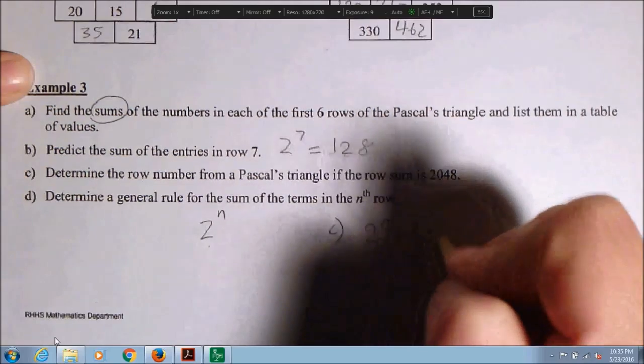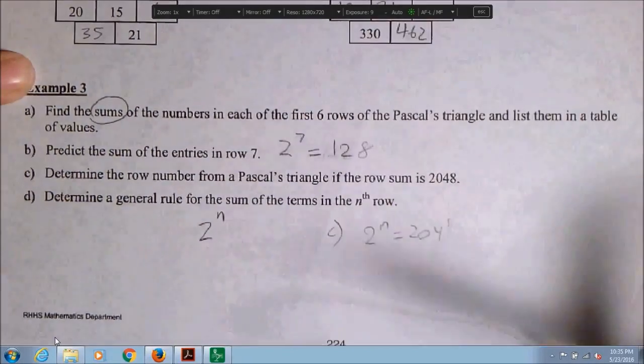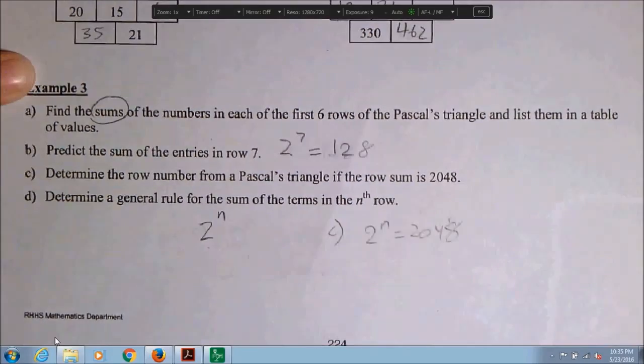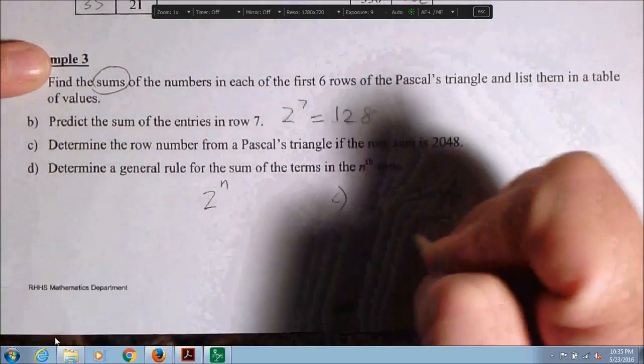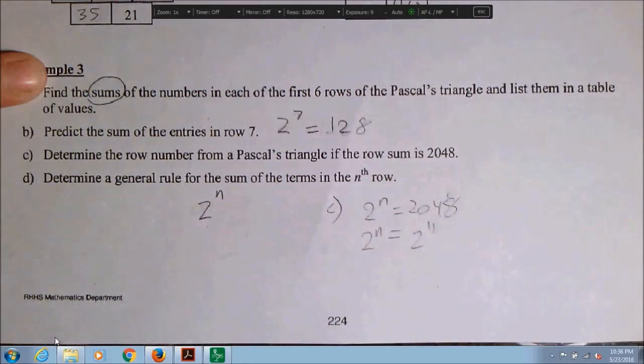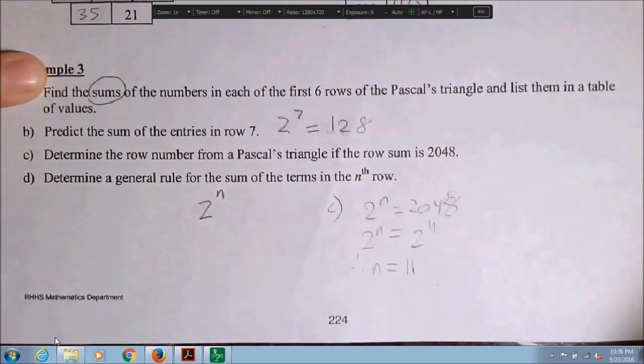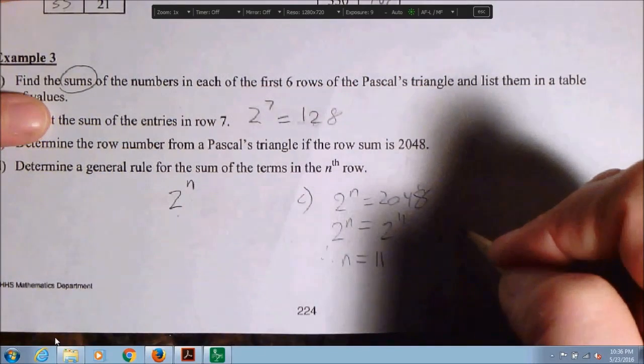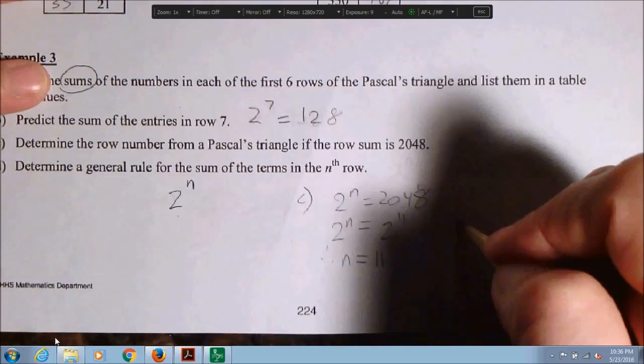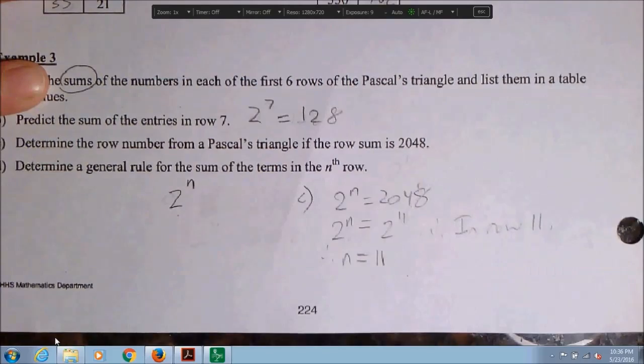So for question C, 2 to the n is equal to 2048. Oops, 2048. Can we solve that? Oh, I think we can. Because 2048 is a power of 2. It's 2 to the 11. So therefore, n is equal to 11. Therefore, in row 11.